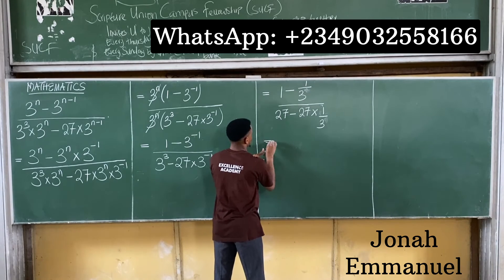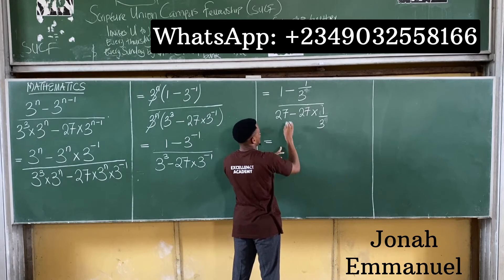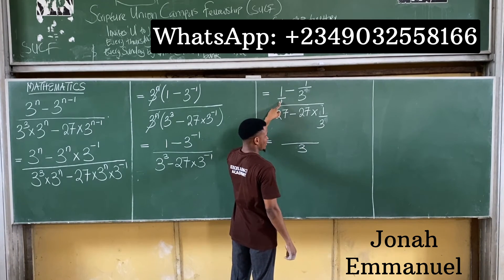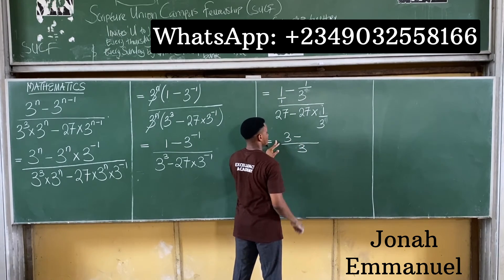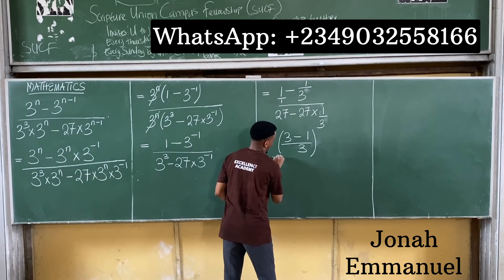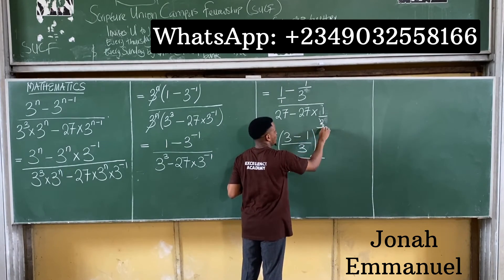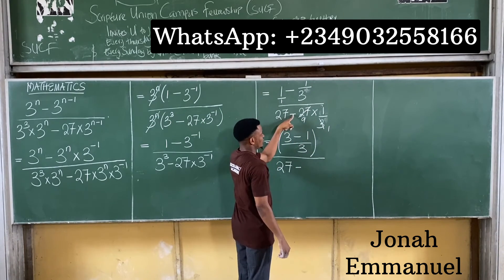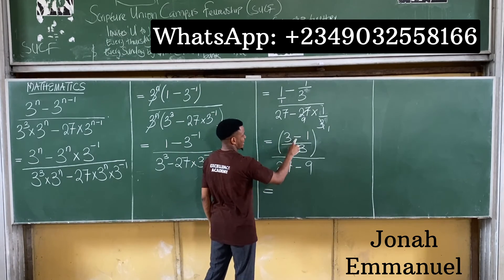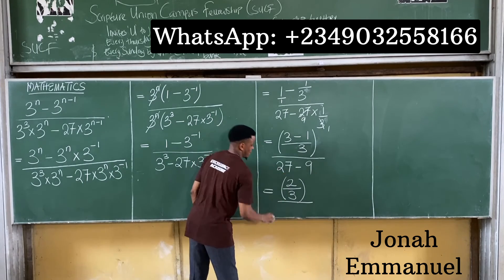Working out the fractions: the numerator 1 minus 1 over 3, using LCM of 3, gives (3 minus 1) over 3, which is 2 over 3. In the denominator, 27 times 1 over 3 equals 9, so we have 27 minus 9, which equals 18. So the expression becomes 2 over 3 divided by 18.